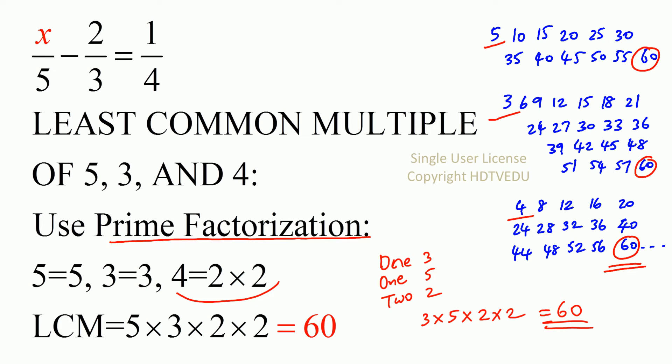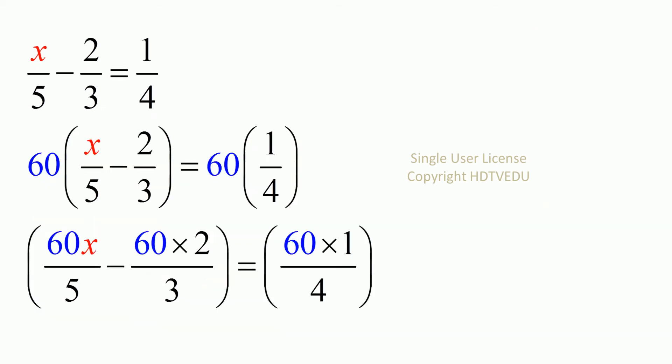So multiply throughout left and right by 60. So here is our starting equation. x over 5 minus 2 over 3 is equal 1 over 4. So multiply both sides by 60. And then distribute 60 to each term. And what do we get?